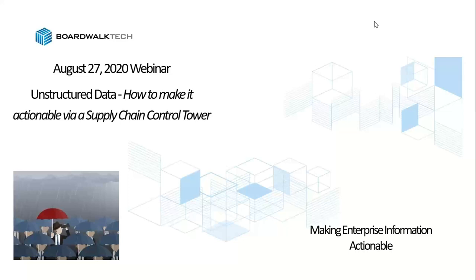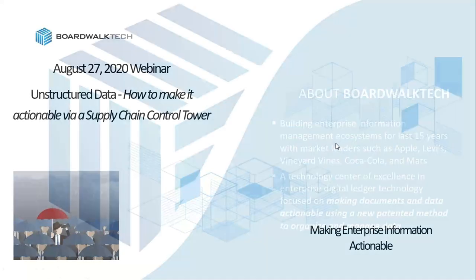We're going to show a bunch of demos. We're actually going to show how to work with information in a fully unstructured format inside of Excel, just kind of from the beginning. Then we'll also show it working in the context of a process, and then we'll also show you within a supply chain control tower how this same type of information for a consumer products company can be used and shared across many different types of applications.